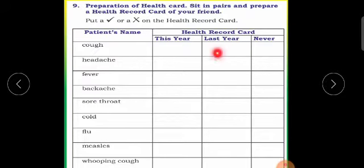Health record card: this year, last year, never. Cough means chemo. Headache means thaleno. Fever means jivara. Backache, then bend now. Sore throat, then gun till now. Cold, then shita. Flu, measles, then amma varathal atra. Whooping cough, then one type of chemo. Health record, prepare.